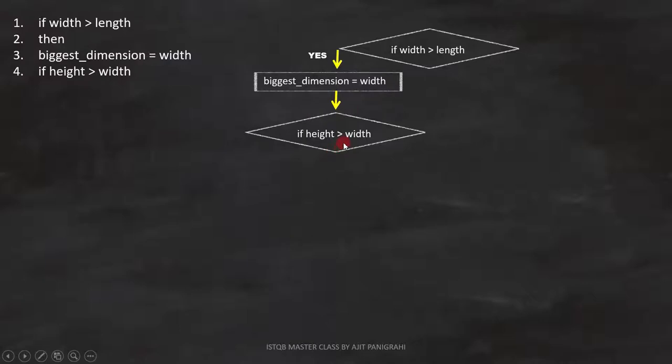Now let's analyze fifth and sixth line: then biggest dimension equals to height. That means, if this condition is correct, biggest dimension equals to height. Until now, we analyzed first sixth line of the code.